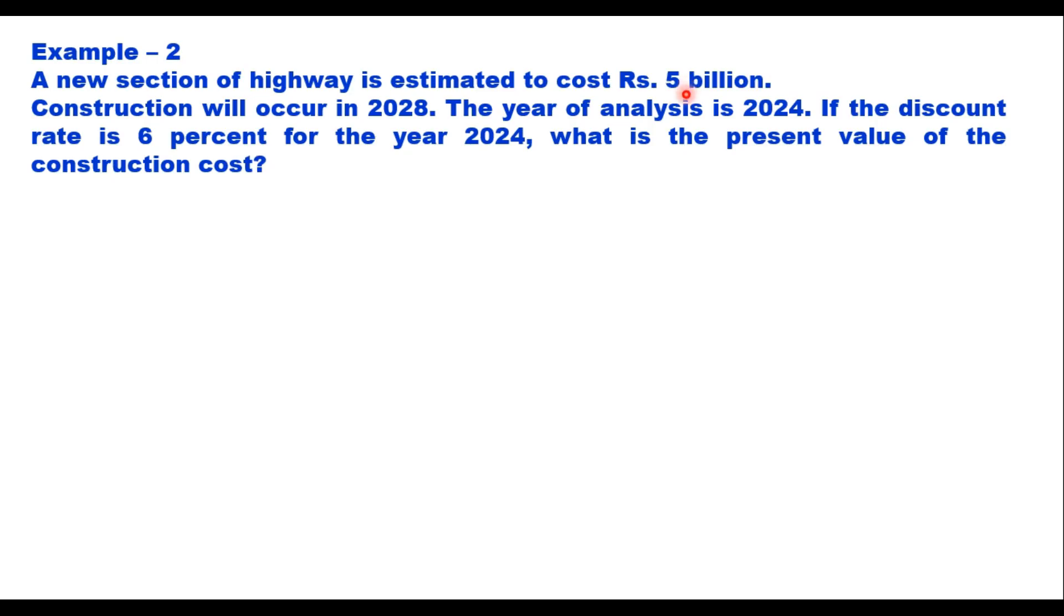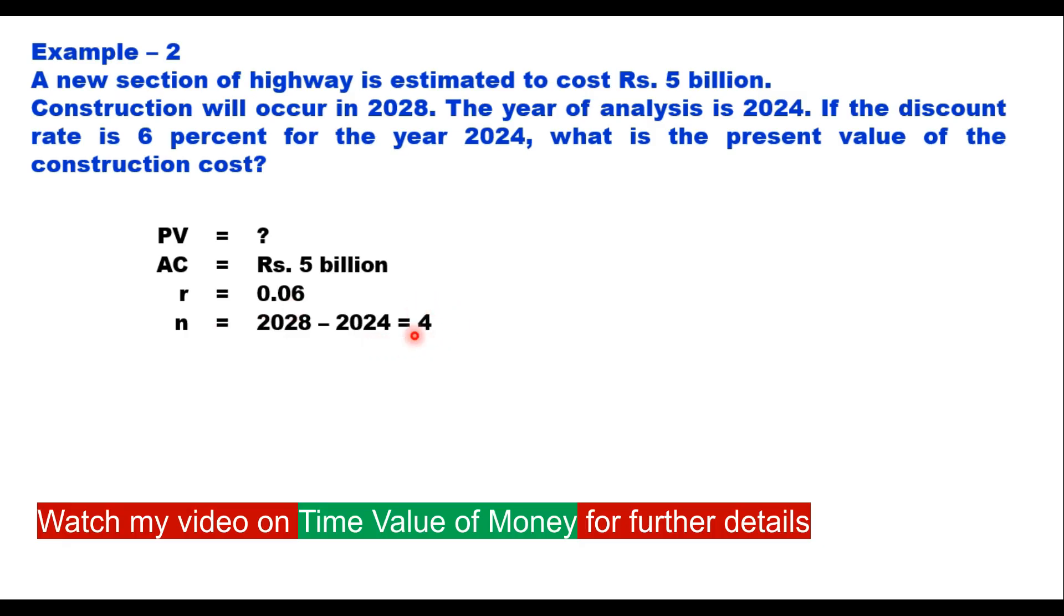So here, we need to find out PV. The annual cost is 5 billion. Rate of interest or discount is 0.06. N is 2028 minus 2024, that is 4 years. So put these values in this equation. That gives you PV is equal to annual cost divided by 1 plus R to the power YI minus Y0.